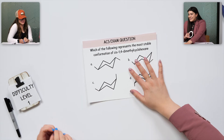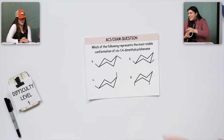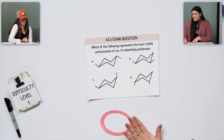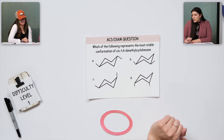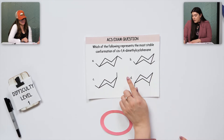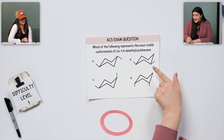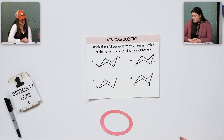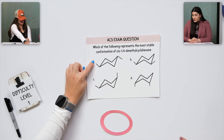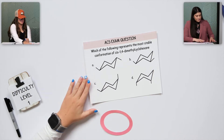This next one is an ACS question. It's asking: which of the following represents the most stable conformation of cis-1,4-dimethylcyclohexane? I'm looking for same direction, so that would automatically cut this one out — I know A is not going to be one of them.